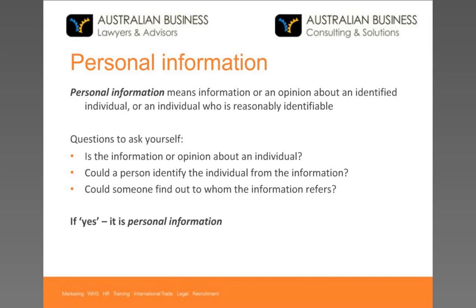The APPs regard the management of what's called personal information. Personal information is anything which can be used to identify, or that can be reasonably used to identify, a particular person. This includes someone's name, contact details, address details — all of those sorts of things. If that's collected or used by your organisation, it would be included in the definition of personal information, and you need to consider how your organisation might need to comply with the Privacy Act.